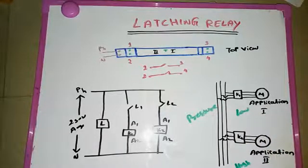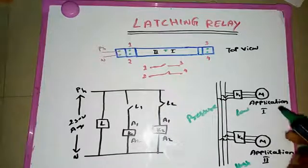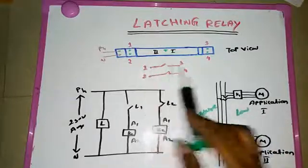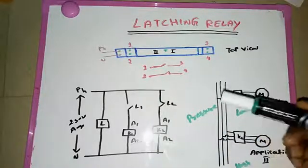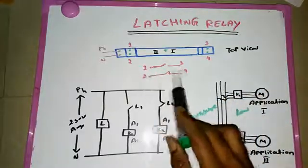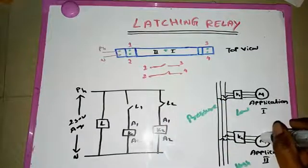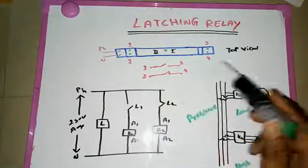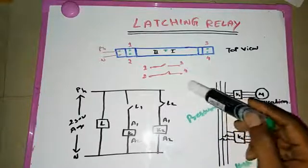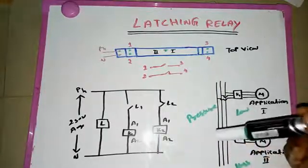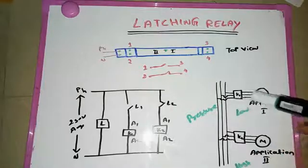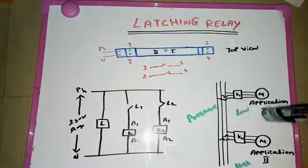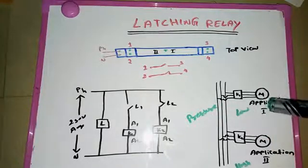For a high pressure machine and low pressure machine — if you need to operate the low pressure machine, you connect terminals one and three, and for the high pressure machine, terminals two and four. The latching relay switches on the low pressure machine based on your message. When you give another message, the relay shifts to switch off the first and switch on the second, going from low to high pressure.